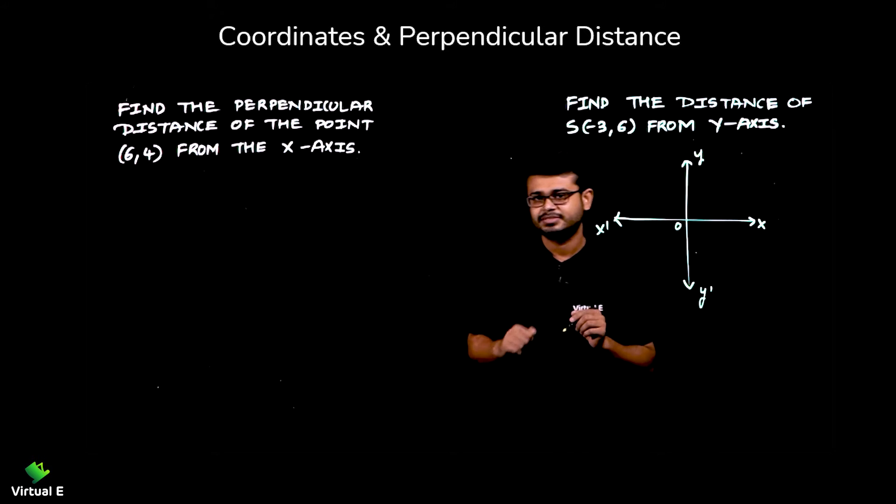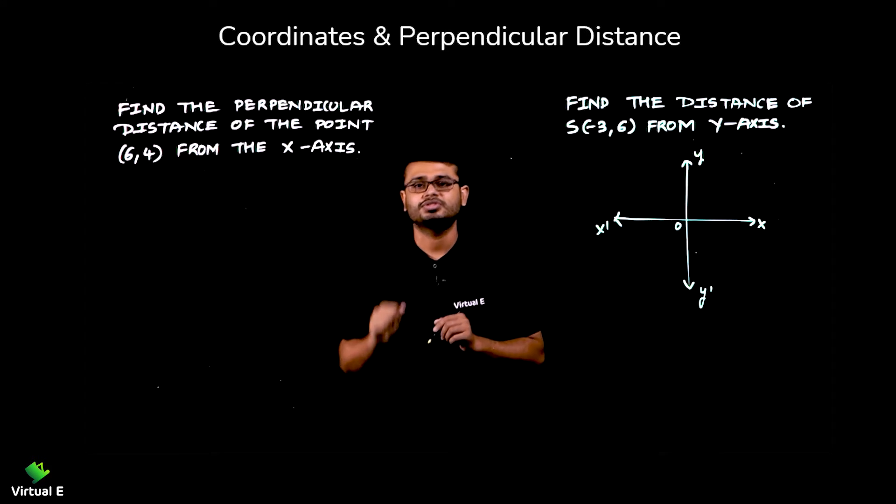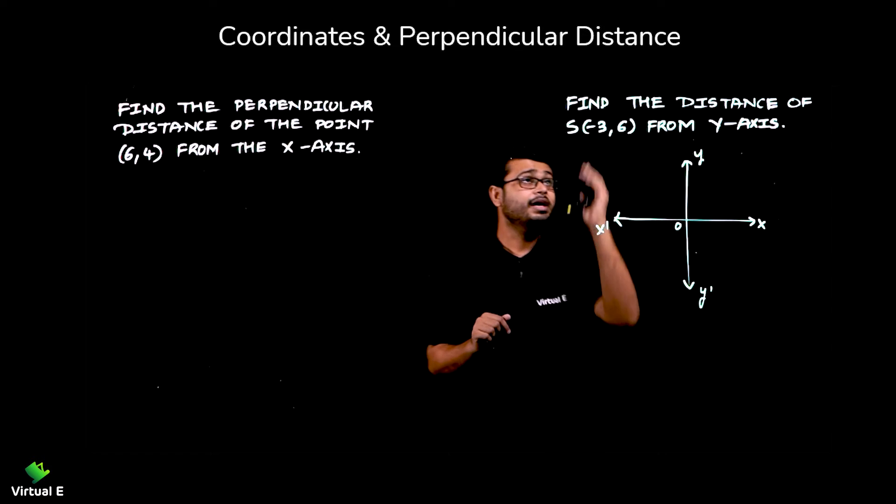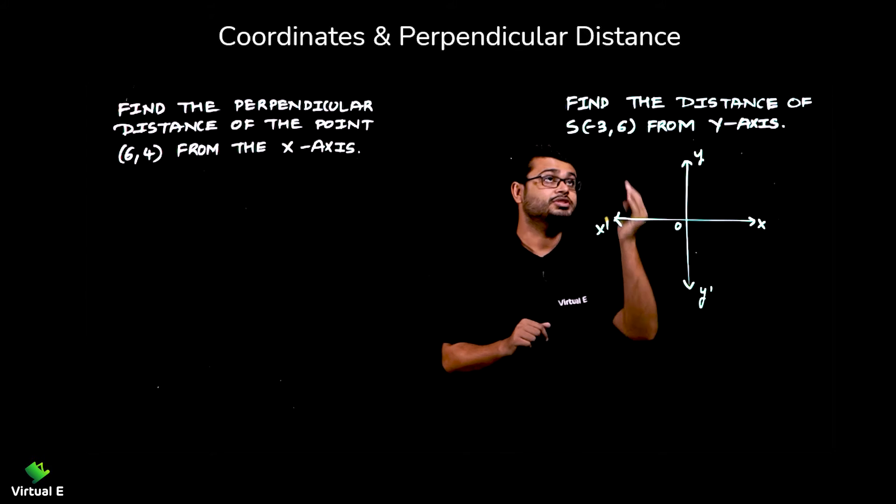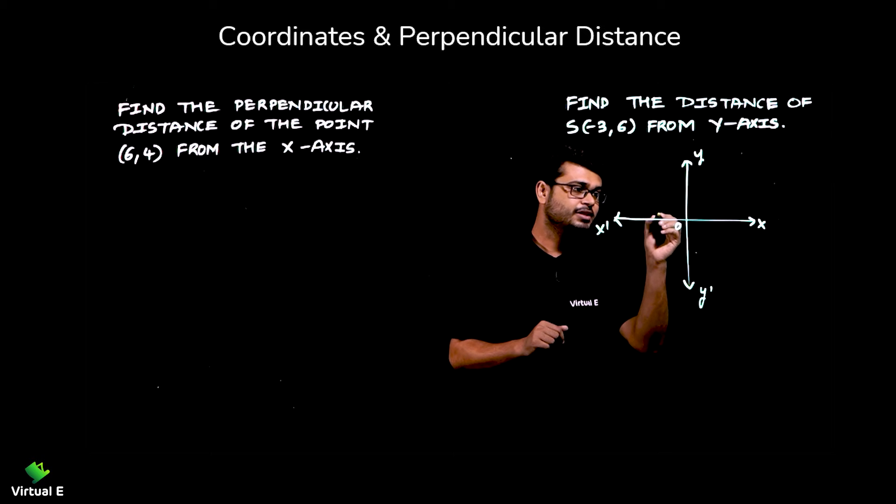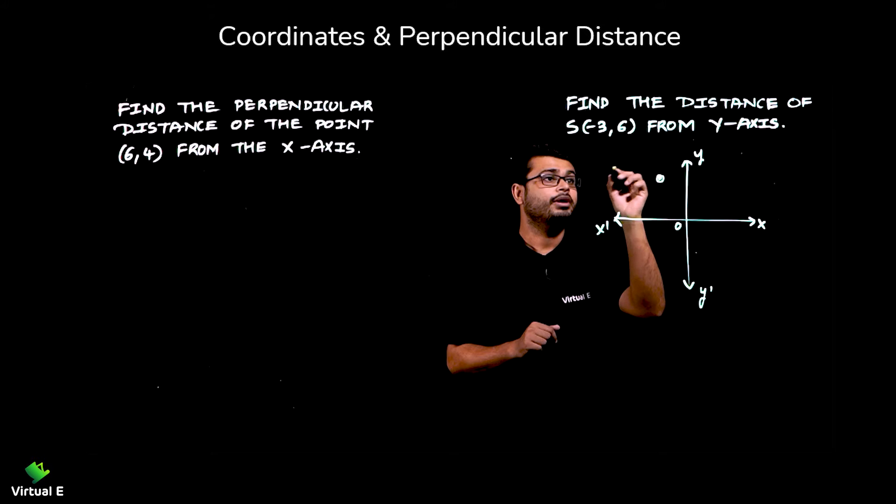Now, (-3, 6), which quadrant does it belong to? Think about it. Okay, x is minus and y is positive. That is second quadrant. So it will be -3, let's say here. Here, it will be somewhere here. Arbitrary point (-3, 6). Good.